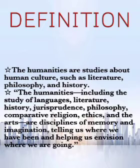The next branch is humanities. I was initially mistaken that humanities is the synonym of social science, but there are differences between them. The humanities are studies about human cultures such as literature, philosophy, and history. Another definition: humanities include the study of languages, literature, history, jurisprudence, philosophy, comparative religion, ethics, and the arts — disciplines of memory and imagination.